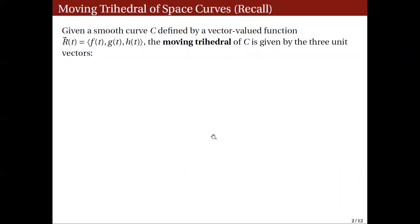First let's check out what we have learned from last time. Given a smooth curve C defined by a vector-valued function r(t) given by three real-valued functions f, g, and h of t as components, the moving trihedral of C is given by three unit vectors. The first is the unit tangent vector T(t), defined as the derivative r'(t) divided by its length, where the length of a vector is the square root of the sum of the squares of the components.